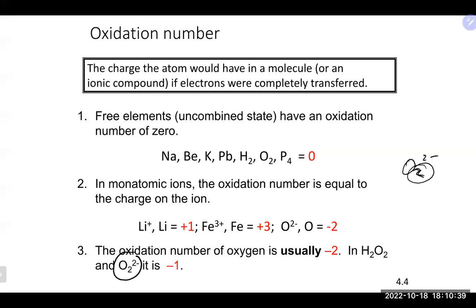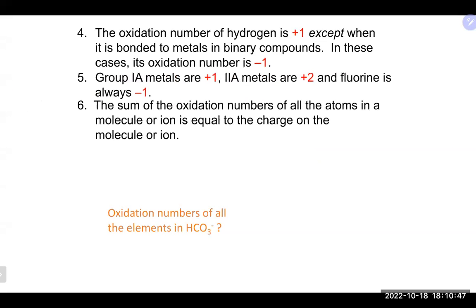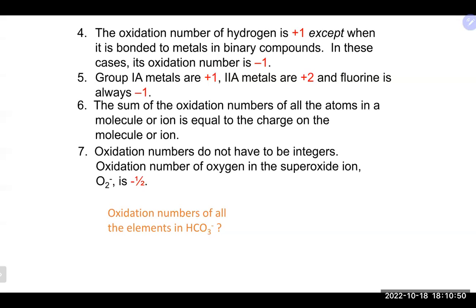Hydrogen is +1, except in ionic compounds where it comes second (as hydride), in which case it is −1. Group 1 elements are +1, group 2 elements are +2, and fluorine is always −1. When you add up all the oxidation numbers, they must equal the overall charge of the species — zero if neutral, or the ion's charge if it is an ion.